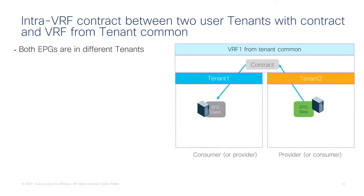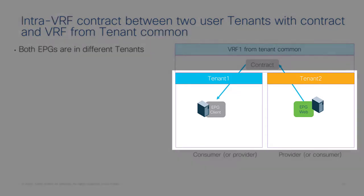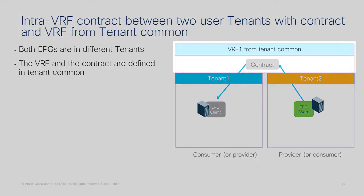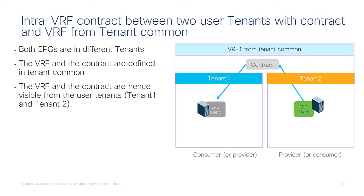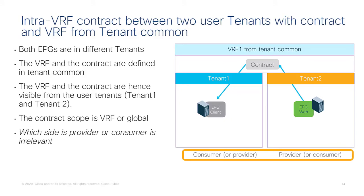Now let's talk about the scenario with an intra-VRF contract between two user tenants using a contract defined in tenant common. Each EPG is in a different tenant, but the VRF and the contracts that both tenants use are defined in tenant common, so they're visible from the individual tenants. This configuration is very simple — there's no VRF sharing involved. The contract scope is either VRF or global, and it doesn't matter which side is provider or consumer.